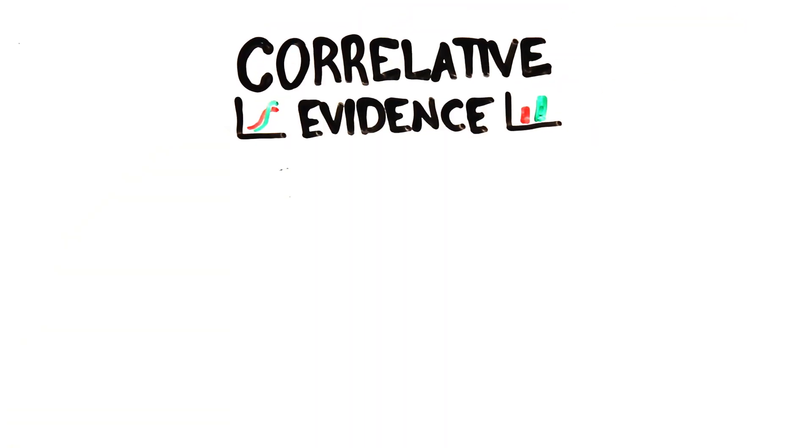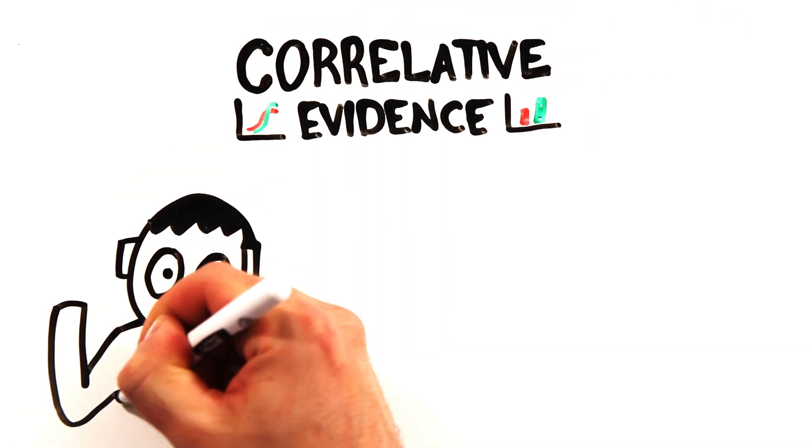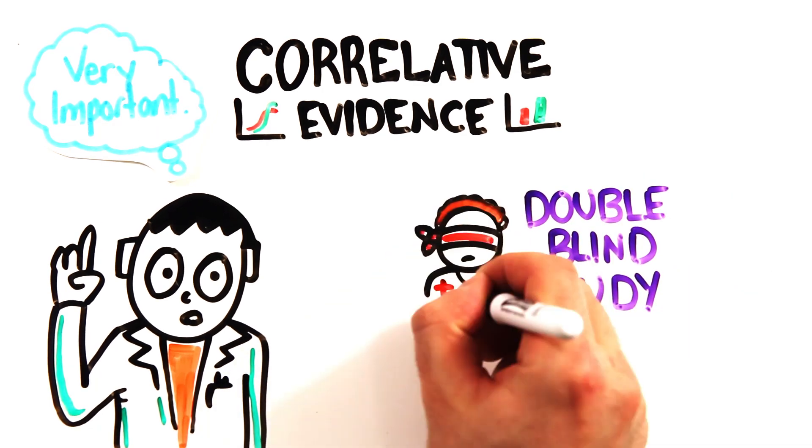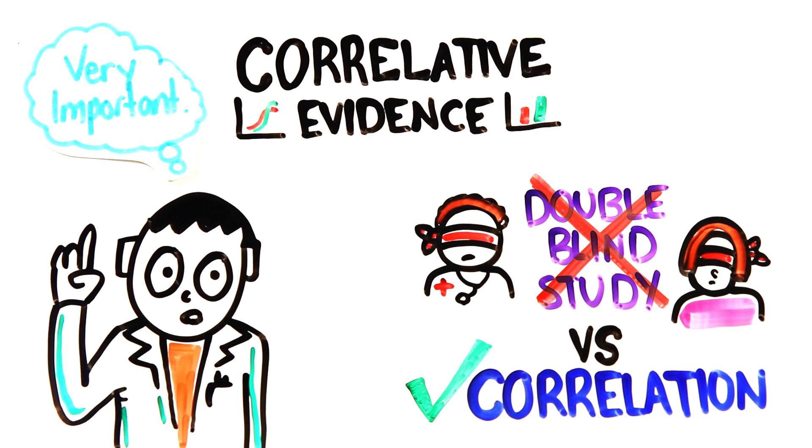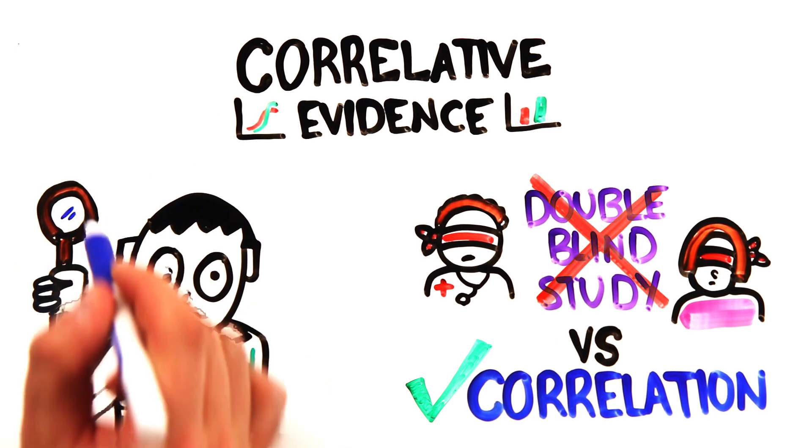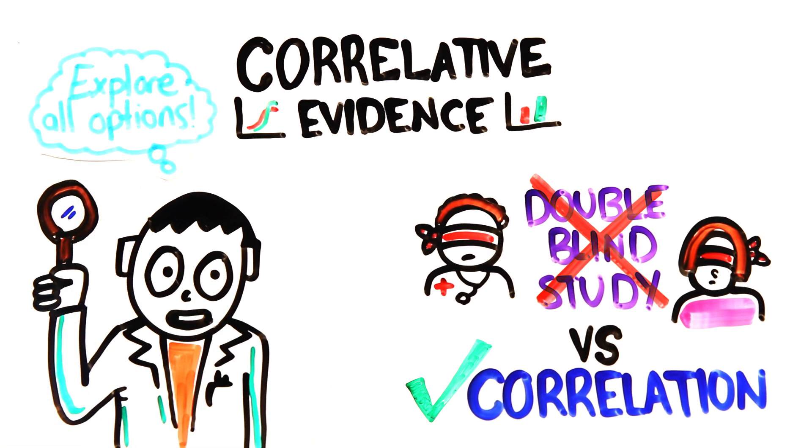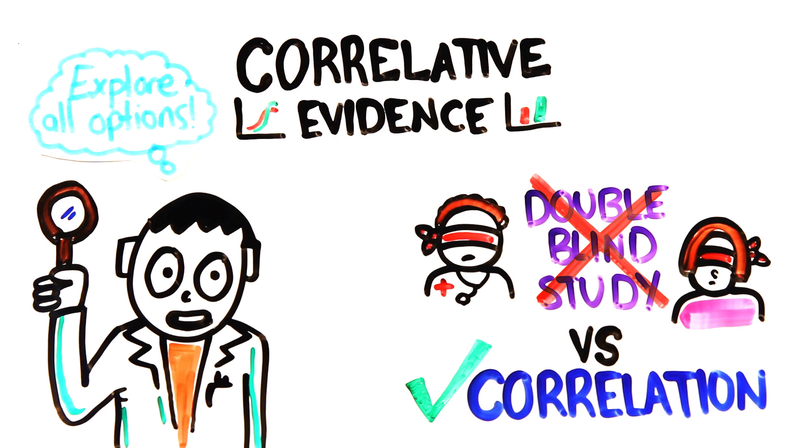With that in mind, however, we can't dismiss correlation entirely. Correlative evidence is an essential part of science. Double-blind studies are not always possible or ethical to run, often leaving correlation as the best evidence available. When every possible causative relationship is systematically explored, correlation can be used as a powerful tool for assessing cause-and-effect relationships and progressing science even further.